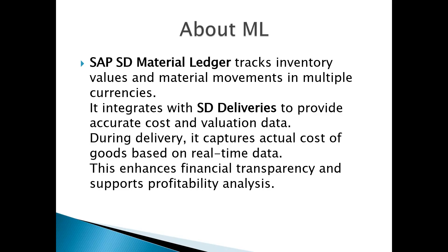Whenever you are creating a delivery, your material cost — either it is a manufacturing product or you are buying from a vendor — whatever you are paying to the vendor, that is your cost. For example, third party sales or individual purchase order, we can buy from vendor. In third party sales, the vendor can deliver directly. In an individual purchase order, we will receive the goods but we pay the amount to vendor — that is our cost. If it is in-house production, we spend some amount to produce that — that is our cost.